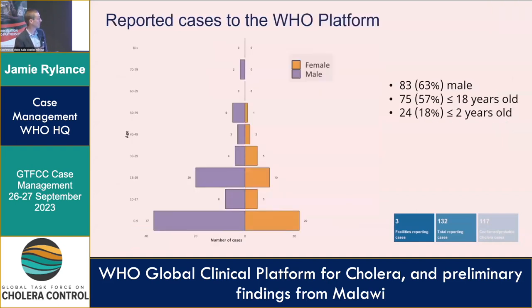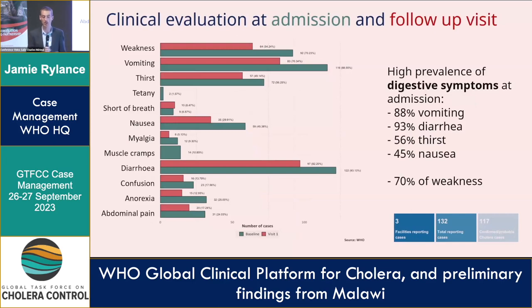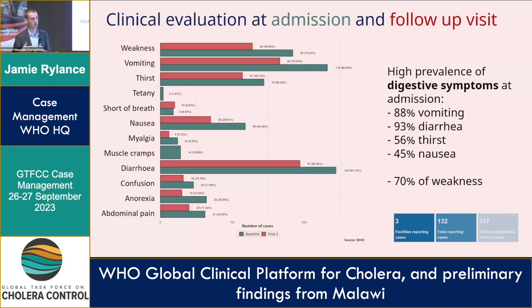Looking at the age pyramids, we do have quite a number of data points from older adults compared to some other outbreaks. We had five pregnant women and 18% of patients under two years old. We capture data on presentation — unsurprisingly dominated by diarrhea and vomiting. In red you can see data from a visit one day later compared to green at baseline, so you can see things improving. At larger scale we could identify at which points mortality occurs within admission and which symptoms it relates to.